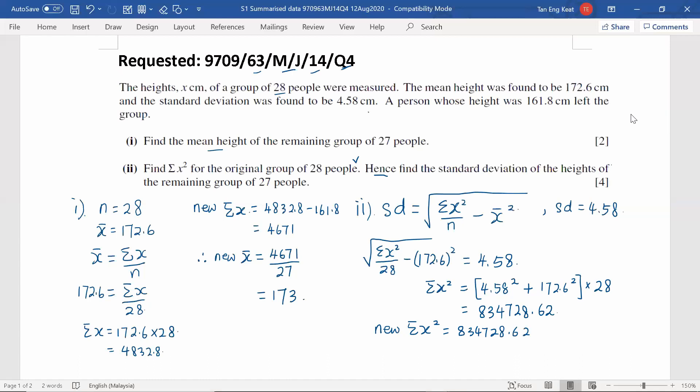Which is taking the sigma X squared of the 28 people, this value found, minus of 161.8 squared. So the person who left, the height 161.8, so we minus out this squared and that's where we get the new sigma X squared. And it's going to be 808549.38.